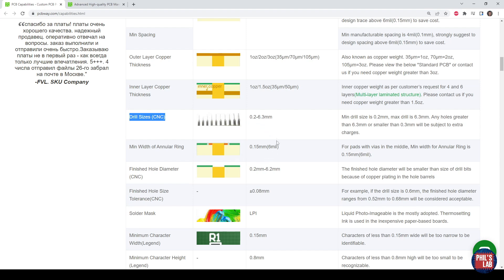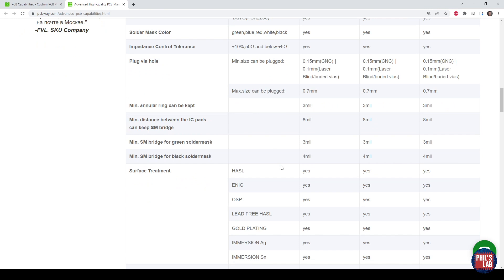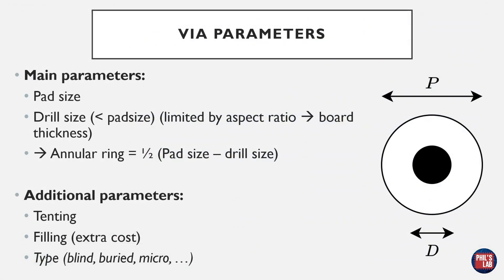It's important to stay away from minimums in PCB manufacturing. Manufacturers offer more advanced capabilities — for example, a 3 mil (less than 0.1mm) annular ring — but you pay extra for that. Beyond drill sizes, pad sizes, and annular rings, there are other via parameters: tenting, which covers the via with solder mask at no extra cost; filling, which has an extra cost; and different types such as blind, buried, and micro vias, which are topics for future videos. In this video I'll focus on through vias, running from top to bottom of the PCB.